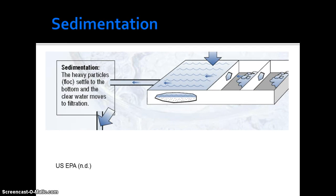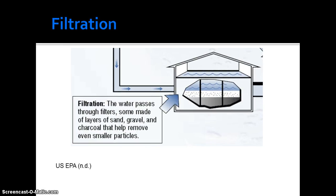In the sedimentation step, the floc — that is, the heavy particles — settle to the bottom and can be collected through a drain in the sedimentation basin floor. In some cases, lighter materials like oils and greases may be skimmed from the surface, depending on the quality and constituents of the incoming water. Clear water then moves to filtration, where it passes through filters made of a variety of materials tailored to the quality of the water being treated. Filter layers may be made of sand, gravel, or charcoal to remove different target chemicals and biological organisms.